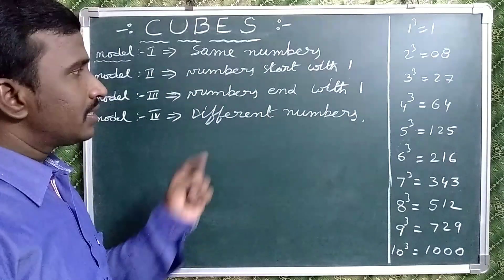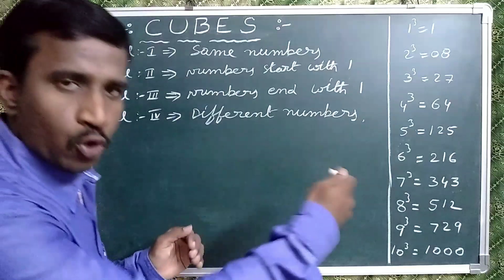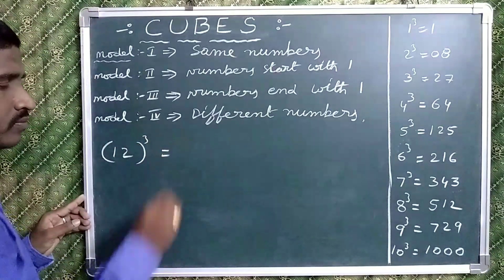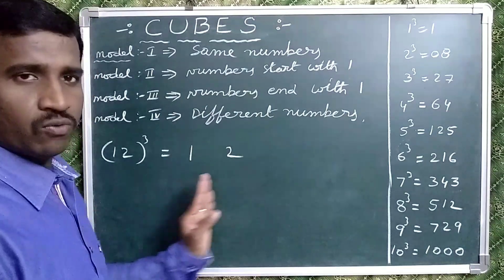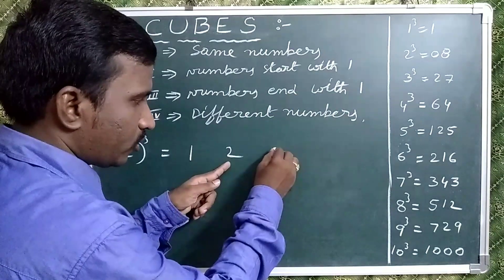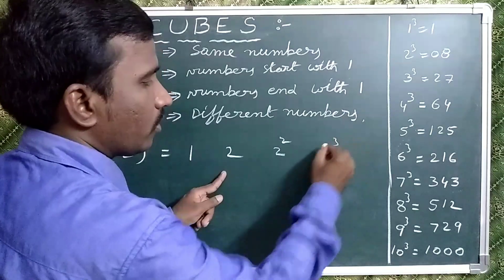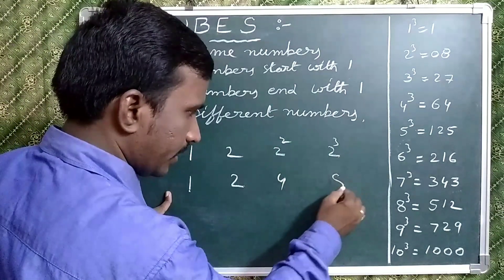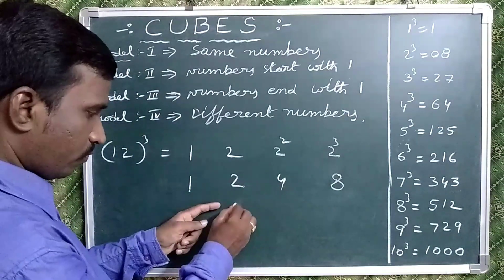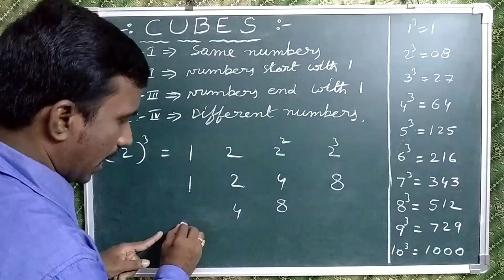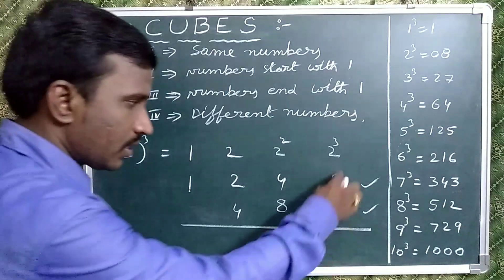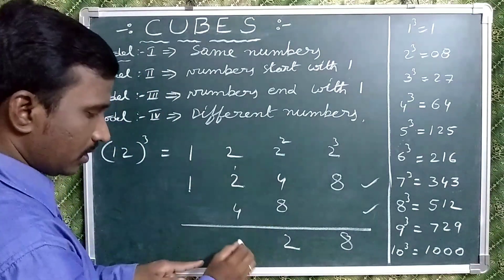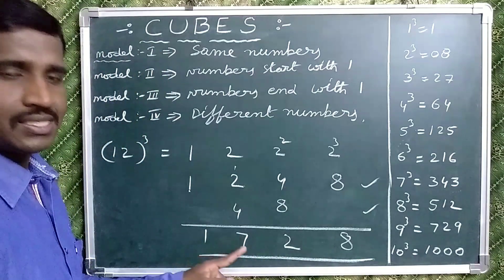Now observe the second model. In this model, numbers starting with 1 means 12 cube, 13 cube, 14 cube, like that. Take first of all 12 cube. Write 1, 2. Next, 2 square — write 4. Next, 2 cube — write 8. Then double of the middle numbers: 2 times 2 is 4, 4 times 2 is 8. Now add these two rows: 8 is 12 — write 8 plus 4 is 12, write 2 carry 1. 4 plus 2 is 6, plus 1 is 7. Write 1. It is 1728 — the cube of 12.